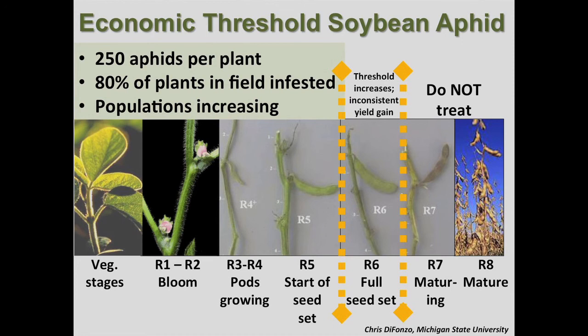Use the action threshold of 250 aphids per plant, with 80% of the plants in the field infested, and when populations are actively increasing. This has a built-in window to arrange for a foliar insecticide treatment — it's about one week long. With a high market value, we recommend that you cut that interval in half, to three to four days.